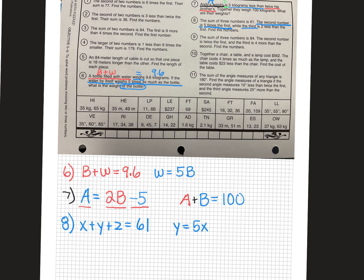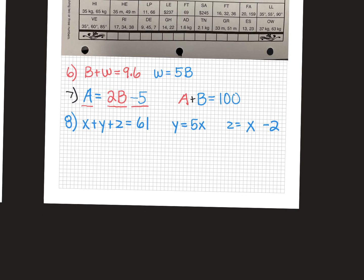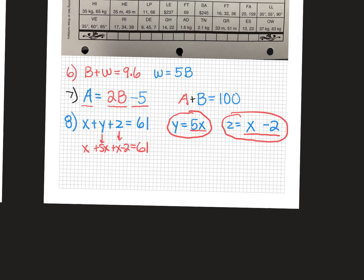While the third number Z equals 2 less than the first number — so Z equals X minus 2. So we have three equations. Now, we're going to replace Y with 5X and replace Z with X minus 2, and then you'll have an equation that looks like X plus 5X plus X minus 2 equals 61. You should be able to figure out what X is, then use the equations to figure out Y and Z. Good luck on that one.